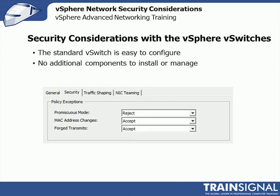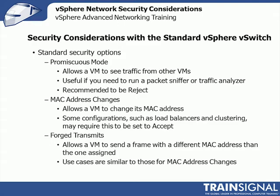There are security settings you can adjust on vSphere vSwitches - these apply to both standard vSwitches and distributed vSwitches with the same configuration items: promiscuous mode, MAC address changes, and forged transmits. Promiscuous mode allows a VM to see traffic from other VMs. Leave this as reject unless using it for a packet sniffer or traffic analyzer. The distributed switch's port mirroring capability does not use this promiscuous mode setting, so you can leave it as reject. On a standard vSwitch, if you're doing packet sniffing, you may need to enable this for the port group you're sniffing traffic amongst.